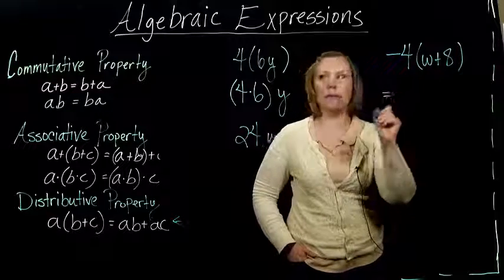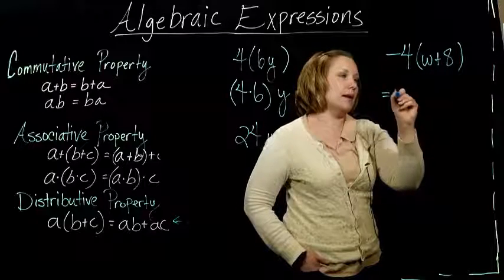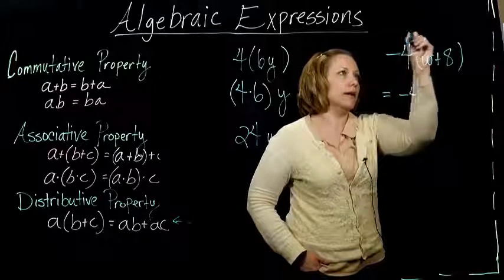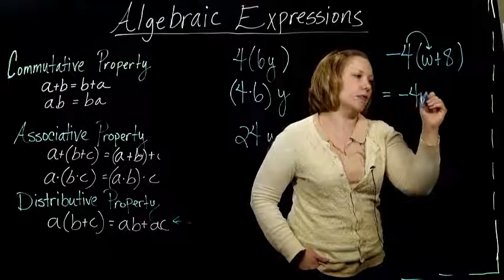What that distributive property says is that this is the same thing as if I took the negative 4, right, and multiplied it by the w, which gives me negative 4w.